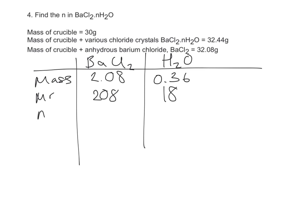Number of moles is mass divided by MR, so 2.08 divided by 208 is obviously going to be 0.01. I don't know why I used my calculator then, silly me. And then for water, we're going to do 0.36 divided by 18 to find the number of moles, which is 0.02.